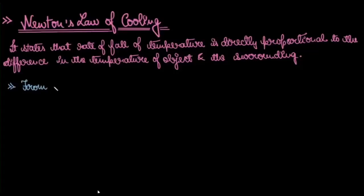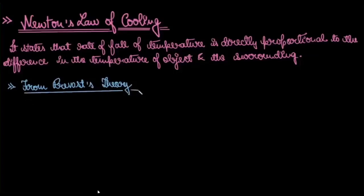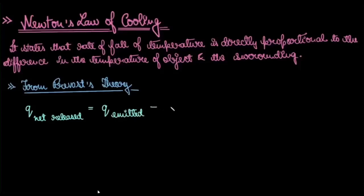From Prevost theory, Q_net (net released) is equal to Q emitted minus Q absorbed.